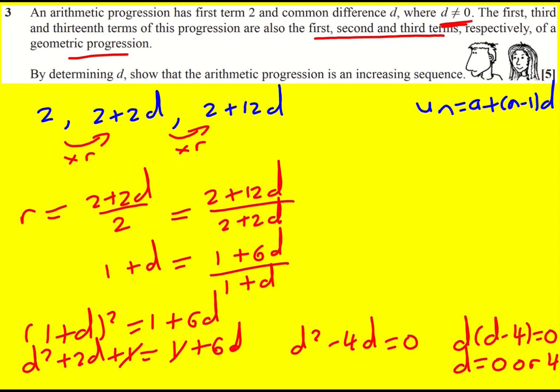Now we were told at the start actually that d was non-zero, so I'll reject this one. So d equals 4. This means that our sequence is going to be 2, 6, 10 and so on.